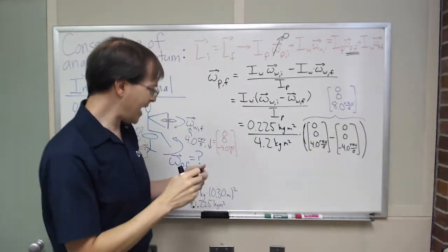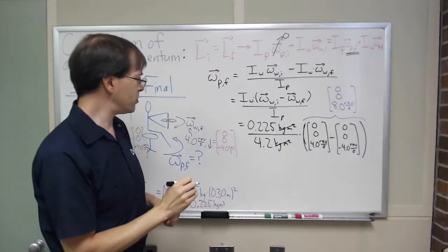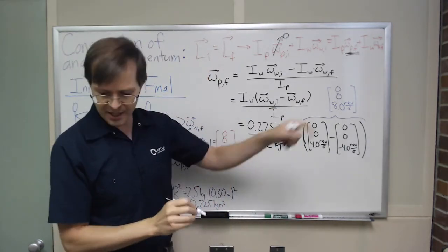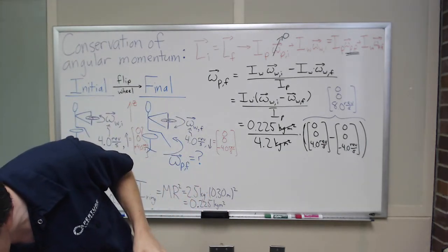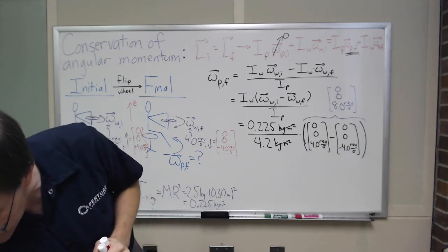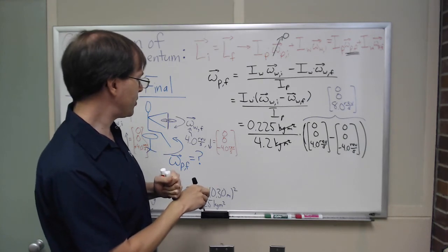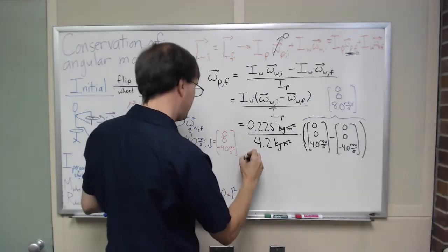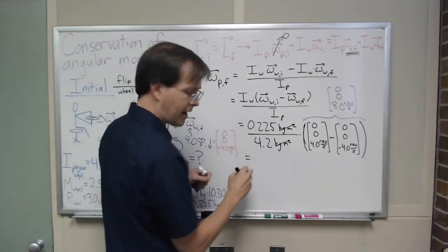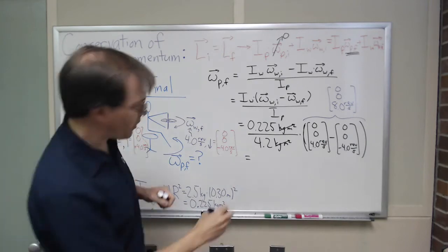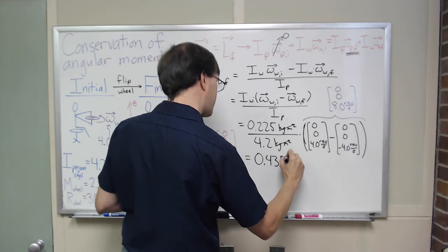And hey, I can put that together, over here I can see my units cancel out, which is good news. 0.225 over 4.2 times 8, when I plug that all together, I get 0.43, do I buy this number? Let me double check it. Yeah, okay, I get 0.43 revolutions per second,